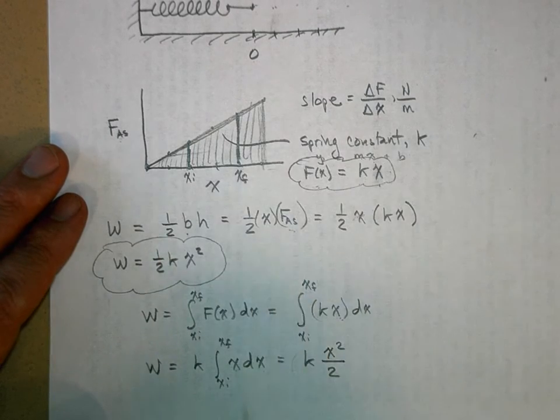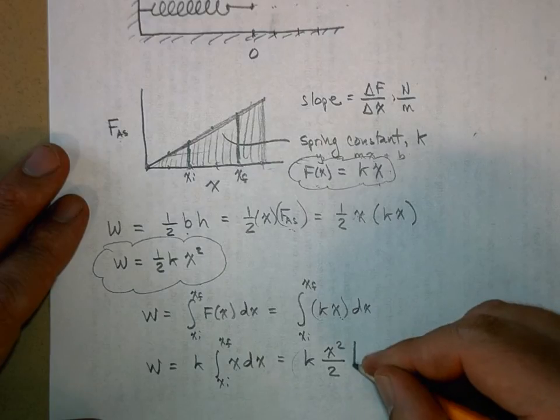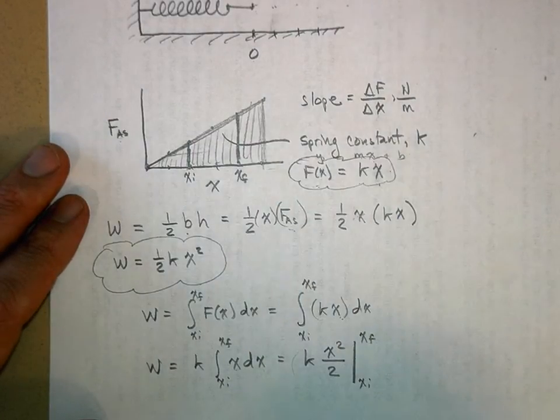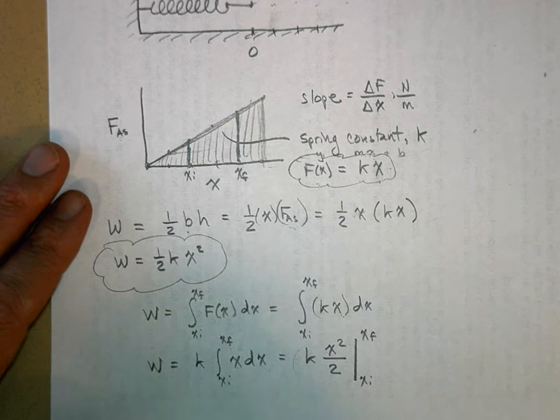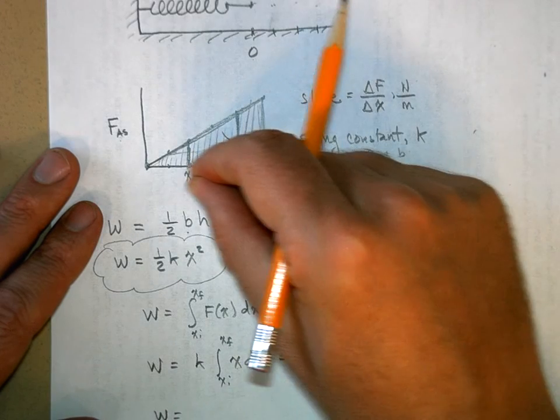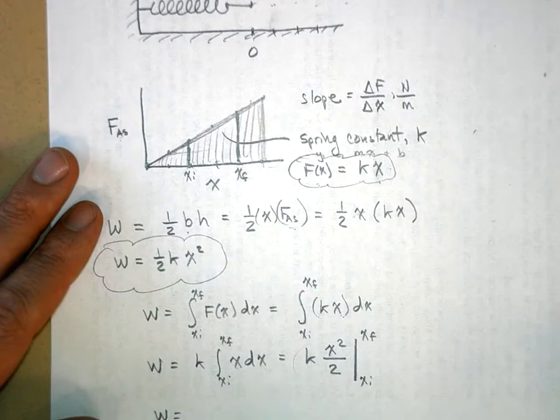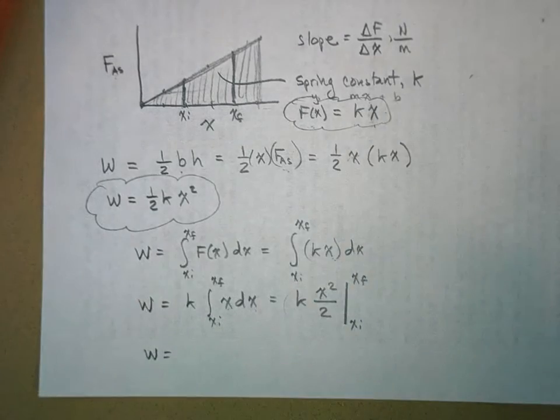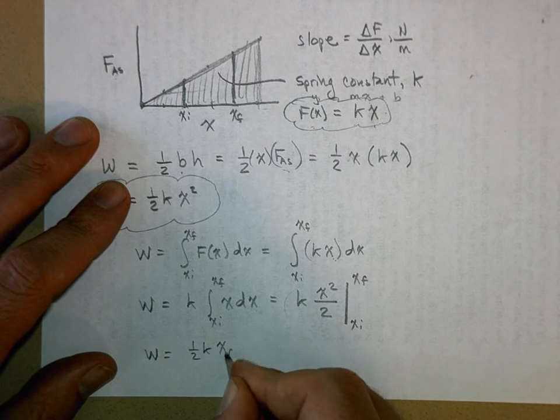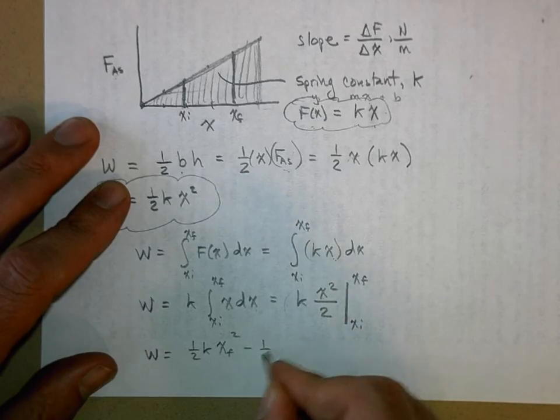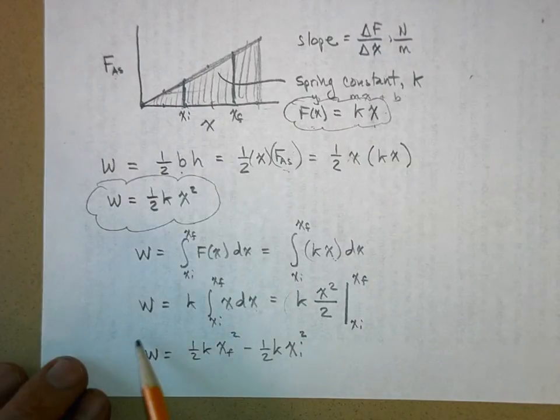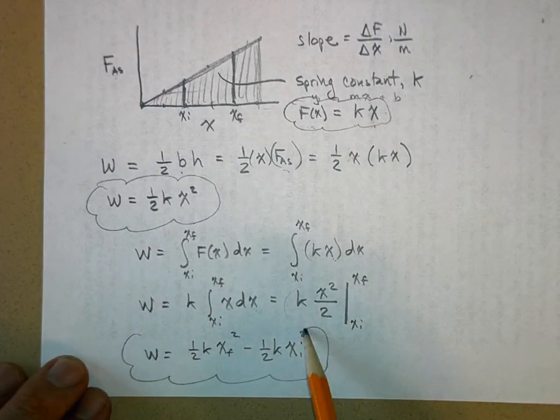One half kx squared is just the area of the triangle. But now we have to evaluate it between x initial and x final. So we say that the work it took to stretch the spring from x initial out to here is one half k x final squared minus one half k x initial squared. This is how much work it takes to stretch the spring from x initial to x final.